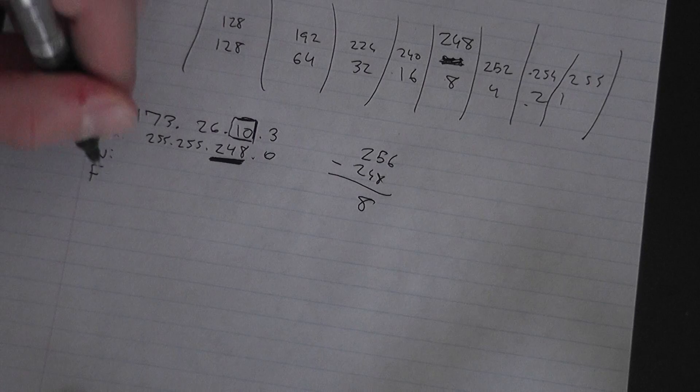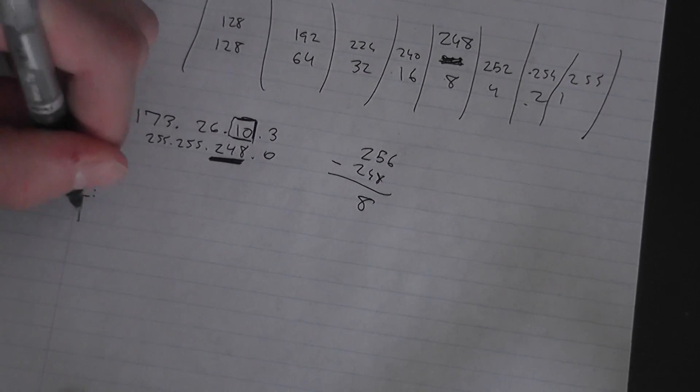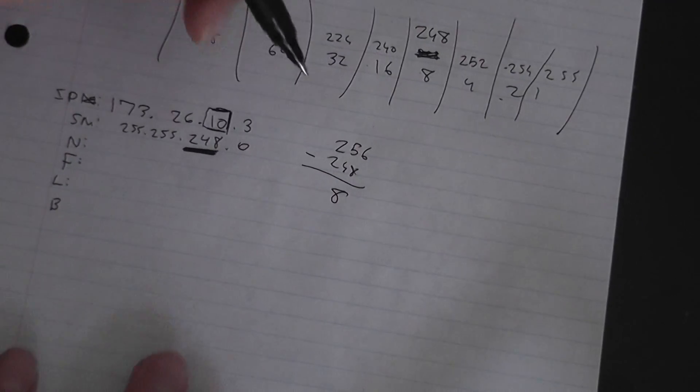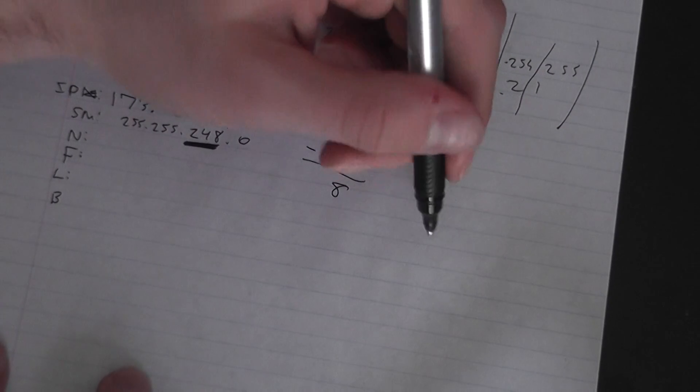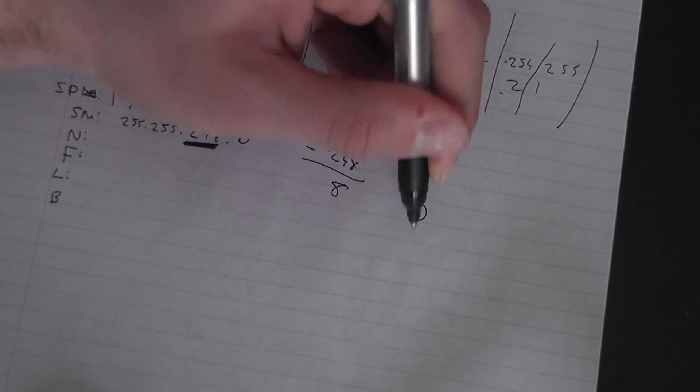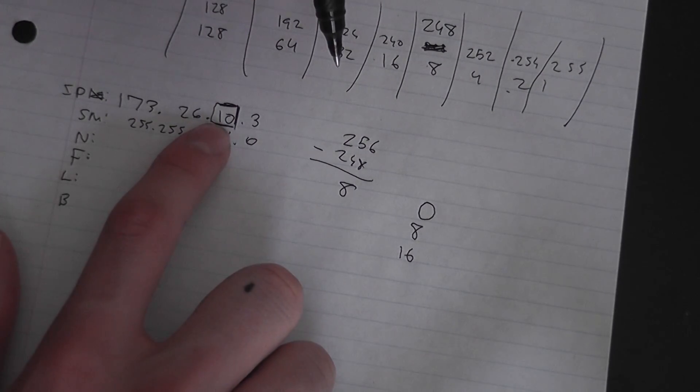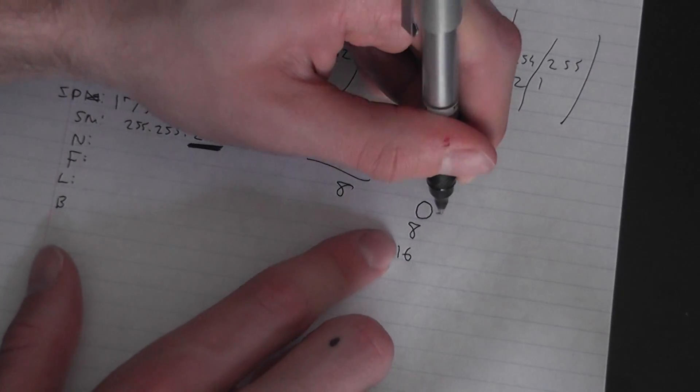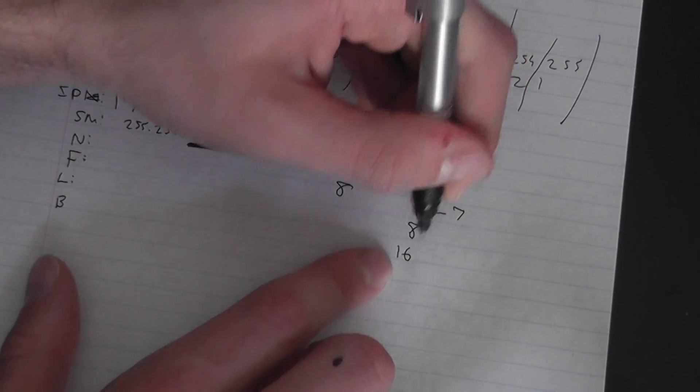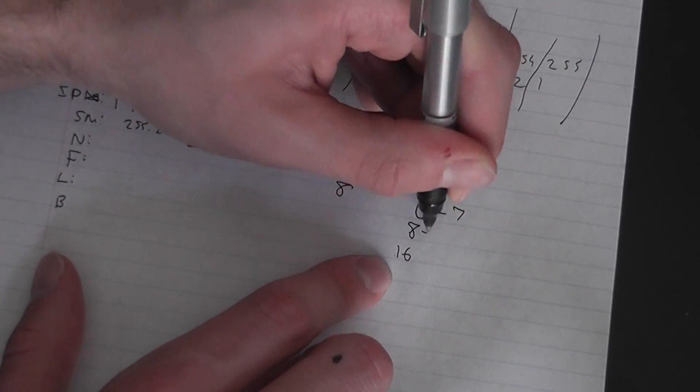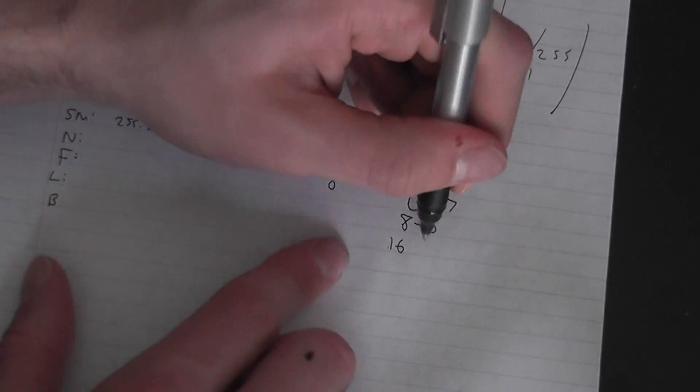Now you would do 8 increments. So you start from 0, then 8, then 16. I can already stop there because what I'm looking for is where can 10 fall under. So 0 minus 1 is 7, 8 minus 1 is 15.